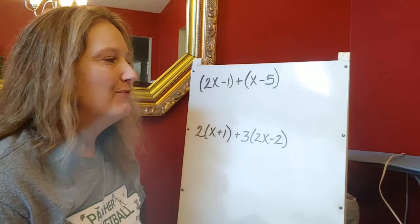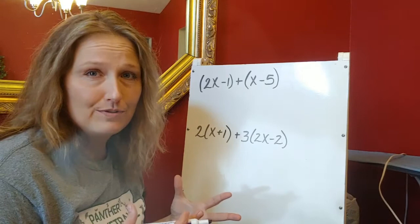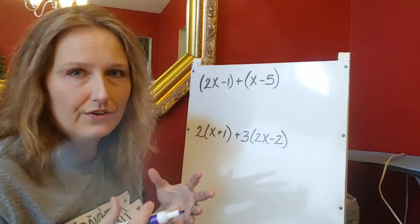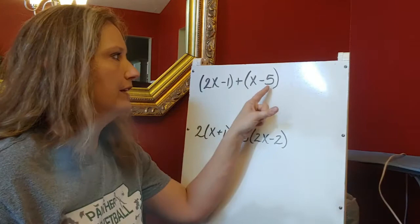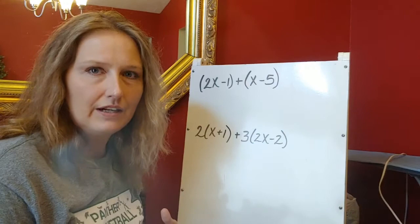We're going to start off with finding our like terms. Like terms meaning I can only add x's with other x's or y's with other y's, and I can only add constants, which are just my regular numbers like negative one and negative five here, and one here and negative two here.